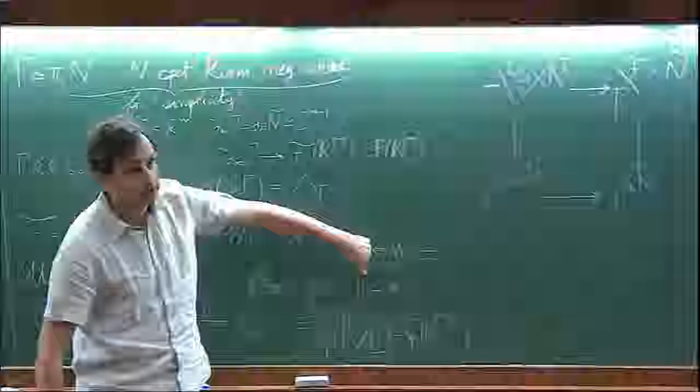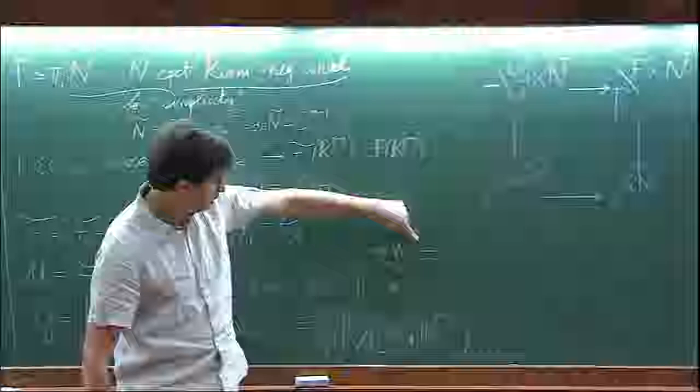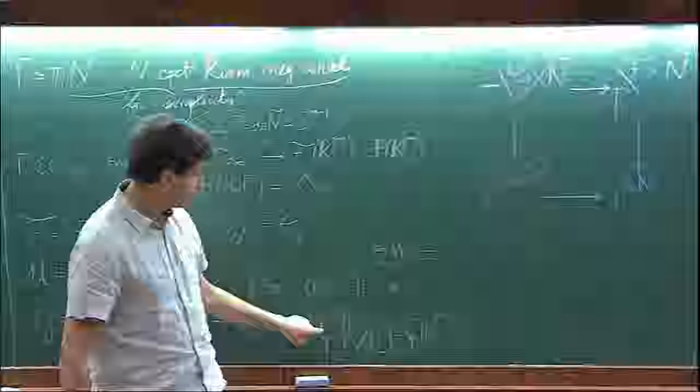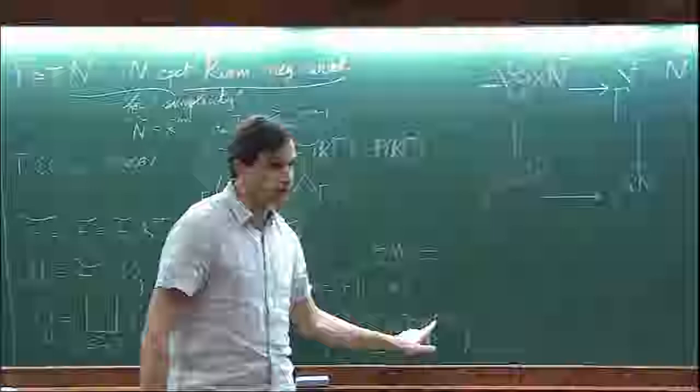We saw yesterday that in this situation this is also equivalent to W being contained in L-orthogonal, meaning that W comes from a Q-minus-1 isotropic plane of the quotient L-orthogonal divided by L. You can calculate that the signature on this quotient is (P minus 1, Q minus 1).